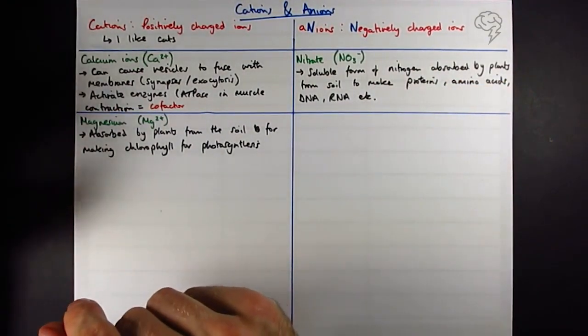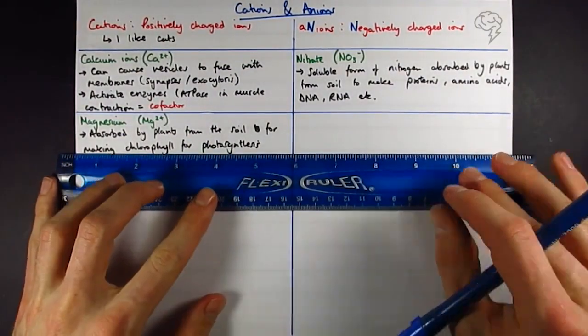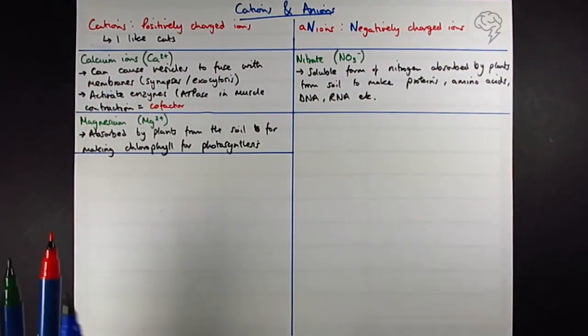That's where the Edexcel students leave us. They're the only three they need to know. There's a few more for you OCR students that you've got to get your head around as well. So next up sodium ions.